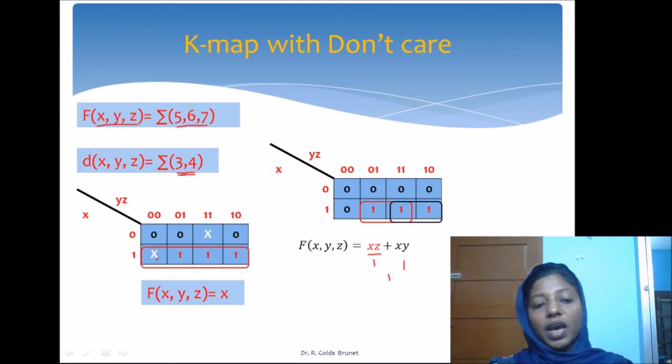Since we have a don't care, we can exploit this and make a bigger block. I can make a single block with four cells together. Y and z vary across these four cells, and the expression is only x. That means I need no computation to get the output of this function. I can redirect the input x as the output, saving three gates. That is the use of don't care.